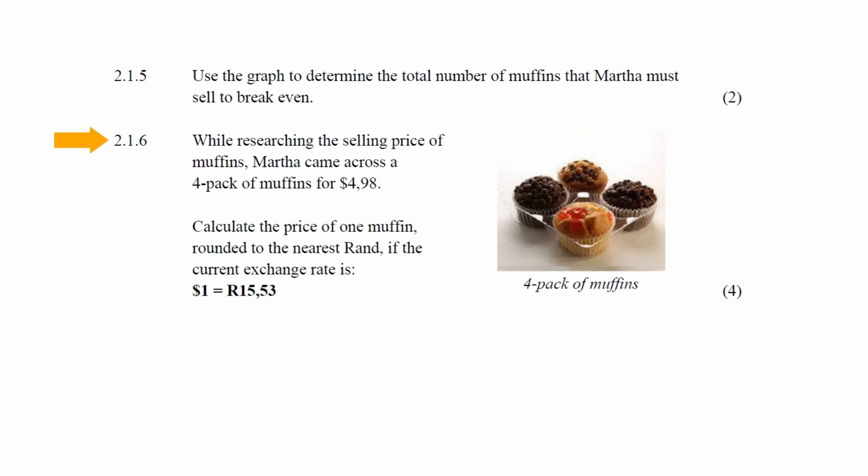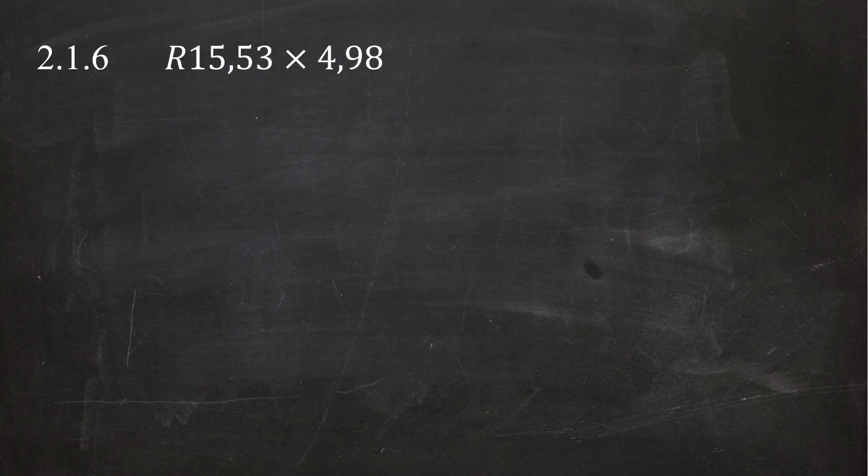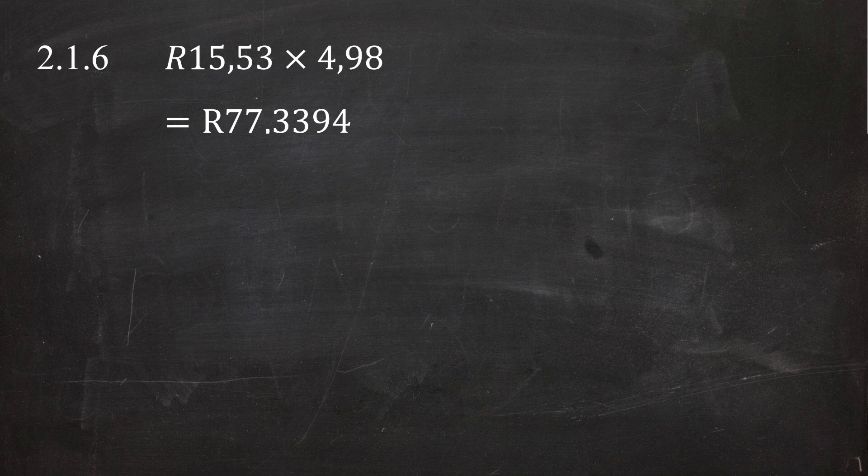In Question 2.1.6, while researching muffin prices, Martha came across a four-pack of muffins for $4.98. You are instructed to calculate the price of one muffin rounded to the nearest Rand, given the exchange rate of $1 = R15.53. First, convert the four-pack price from dollars to Rand using the exchange rate: R15.53 multiplied by $4.98 equals R77.3394. You then divide by four to find the cost per muffin.